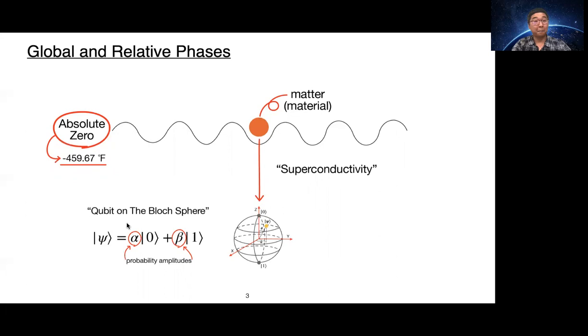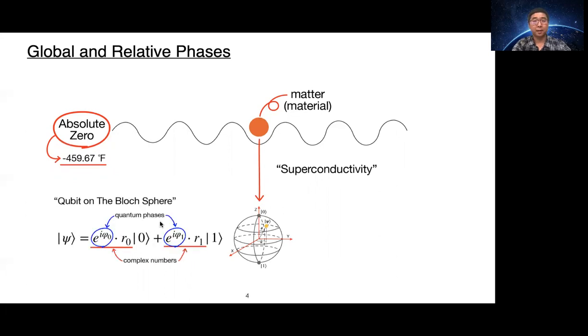The alpha and beta are probability amplitudes of complex numbers. Each complex number can be written as a quantum phase times amplitude. Here, e to the i phi 0 and 1 are quantum phases that occur in a quantum environment, and r0 and r1 are probability amplitudes.